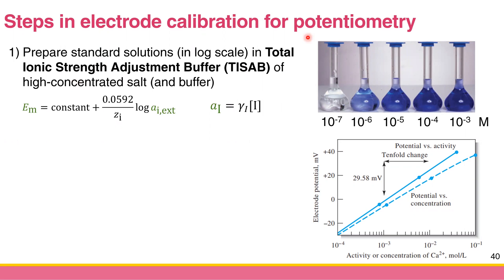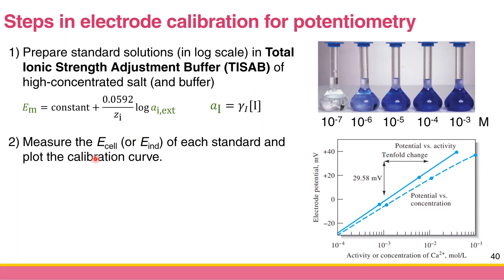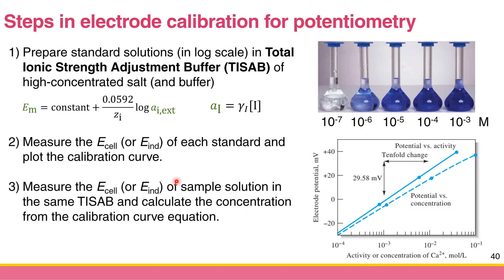The first step to do potentiometry is to prepare a series of standard solutions in TISAP. The second step is to measure the E_cell — the indicator electrode or cell potential — of each standard, then plot the calibration curve. Once you have the calibration curve, prepare your sample the same way, measure its E_cell, and plug it into the calibration curve equation.